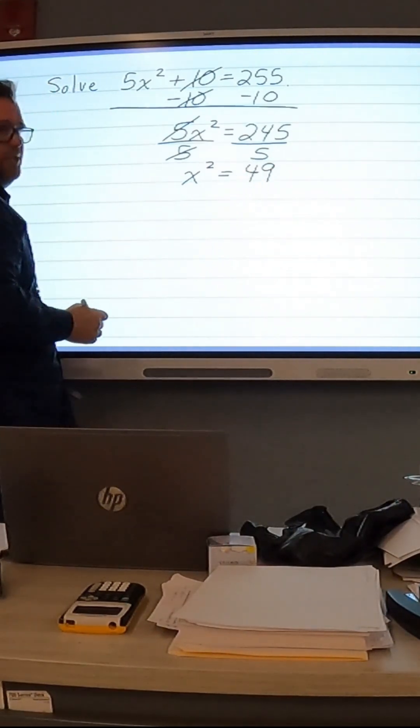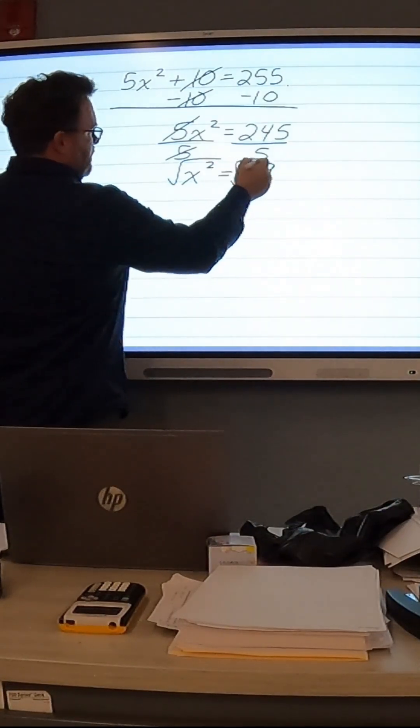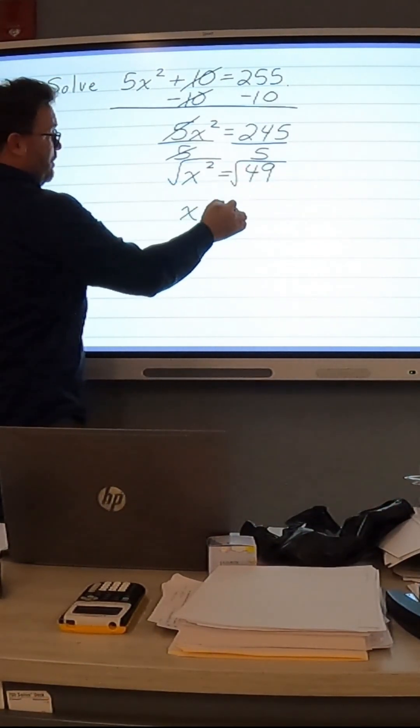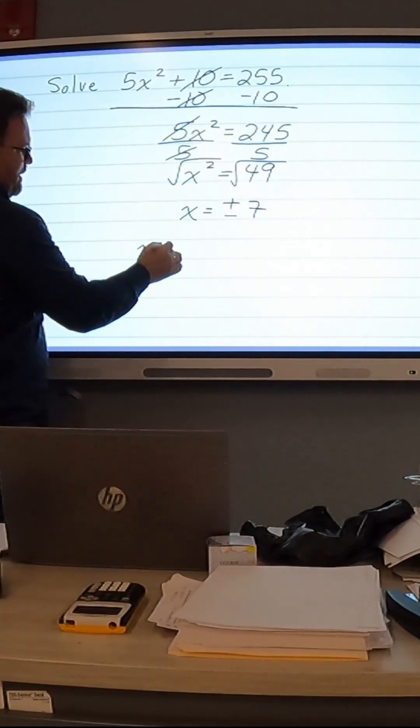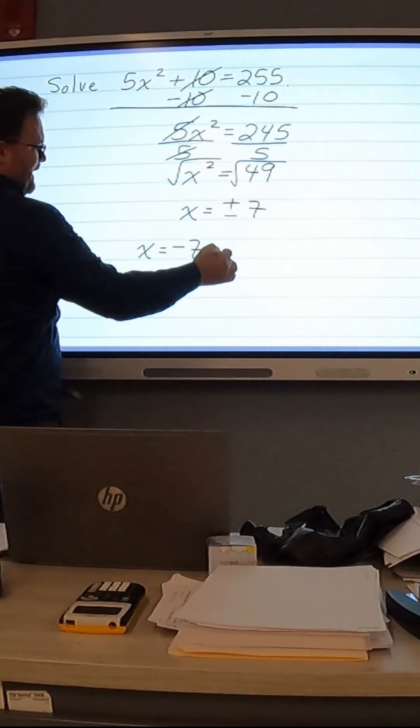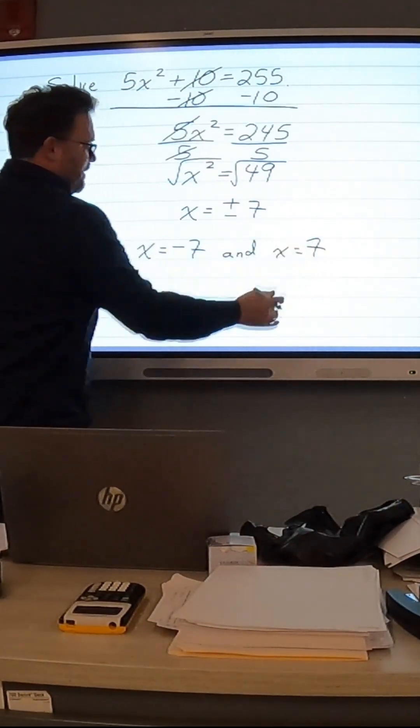We now want to take square root of both sides. And we'll get x equals plus or minus 7. So our two solutions are x equals negative 7 and x equals positive 7.